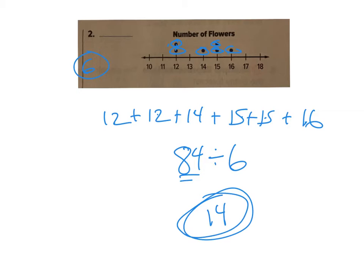That's my average — looking at it to make sure it makes sense: we have a couple in the 15s, one 14, one a little higher, a couple a little lower, so the average should be somewhere in there, and it is 14. Hopefully you got that one right — I've got two more.